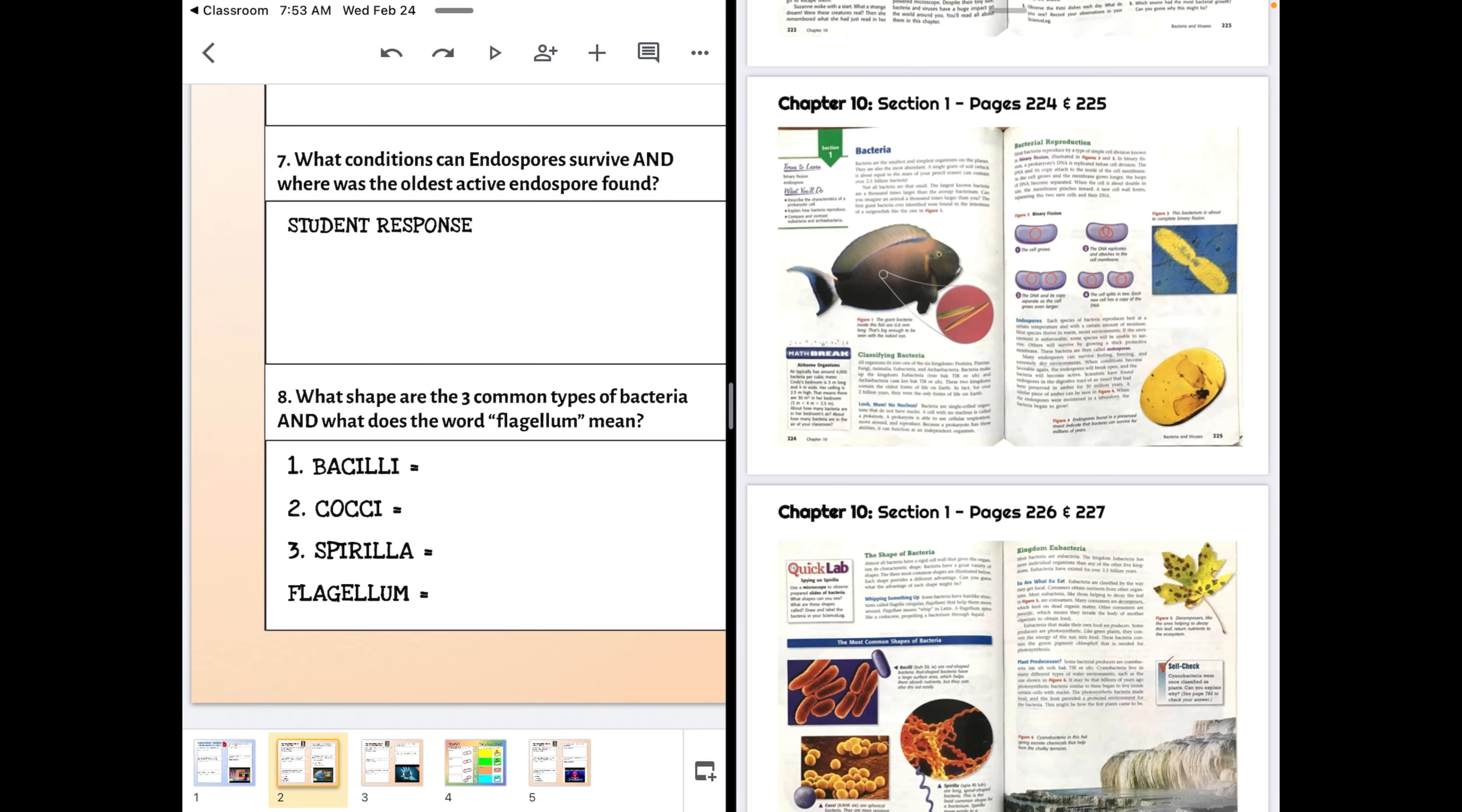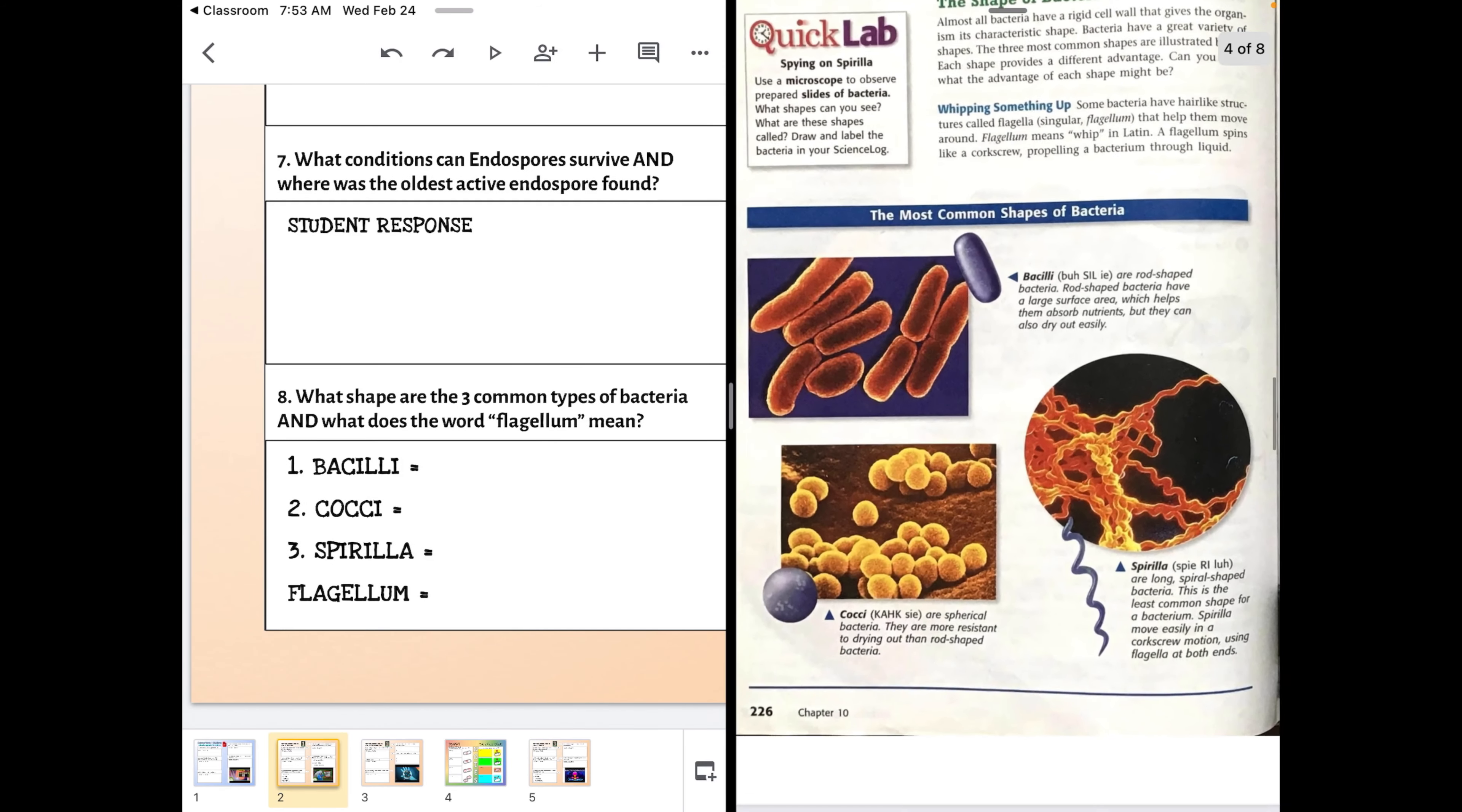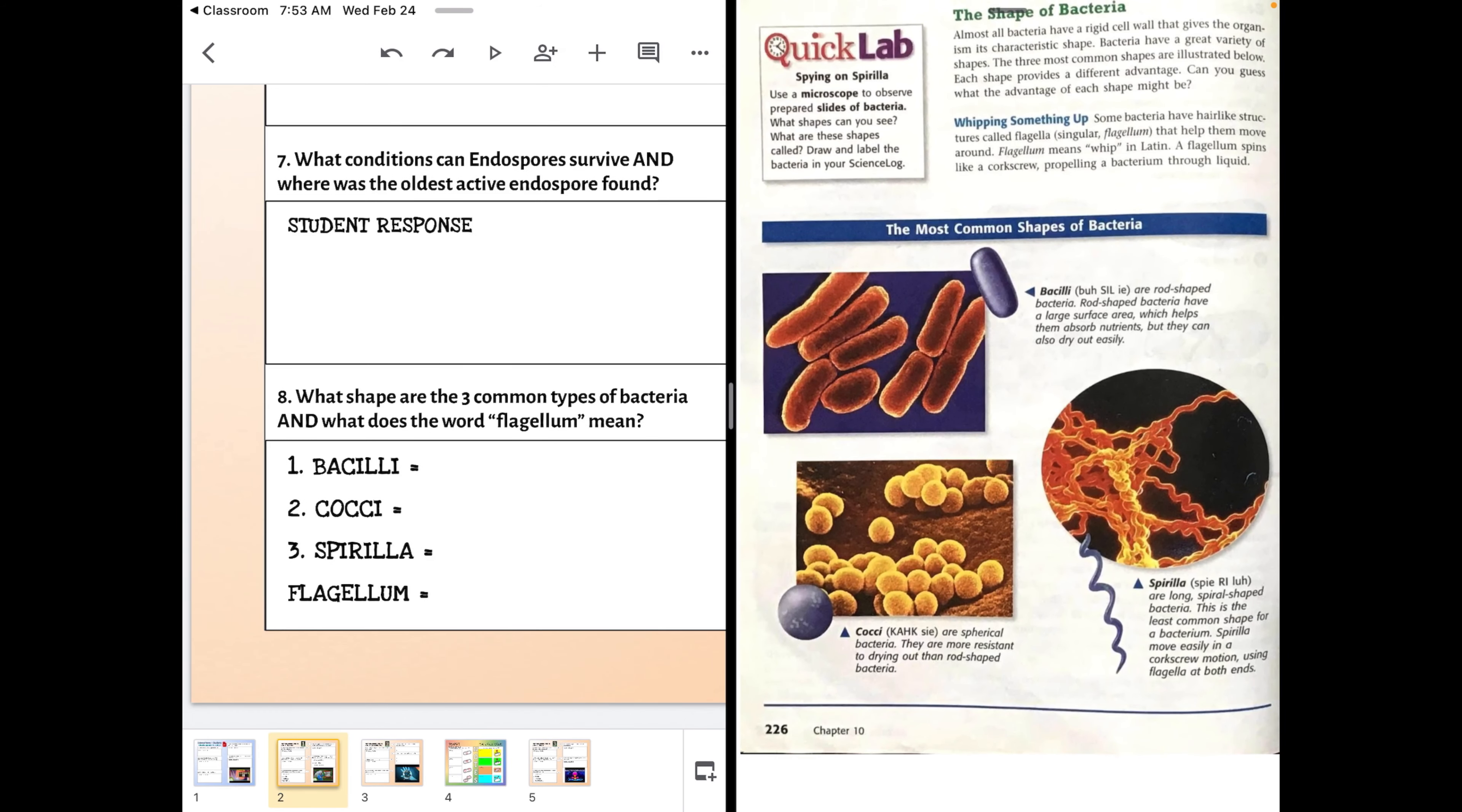Question eight, bacterial shapes are how they were identified for a long time before we had good DNA technology. These are Latin names: bacilli, cosi, spirilla, and then flagellum isn't a shape, it's an extension or part that some bacteria have. You just need to tell me what they mean in English. What shapes are they? And flagellum, what does that word mean in English? So look for quotations and look for explanations.